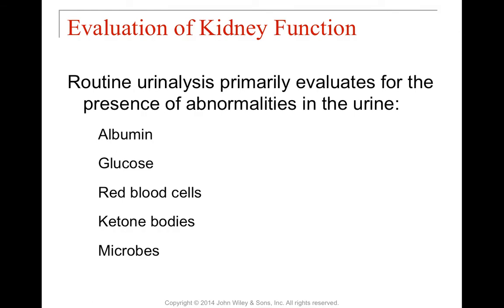Urinalysis evaluates how well your kidneys are functioning by detecting the presence of certain things in the urine that ought not be there, or levels of things that are supposed to be there within certain concentrations. Albumin, a protein, should not be present at all — it should be kept in your blood supply. Glucose should also be resorbed, so its presence indicates a problem. Red blood cells in the urine are always a bad sign. Ketone bodies can indicate bad blood pH and may signal that you're heading into acidosis.